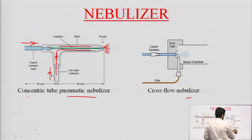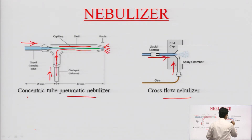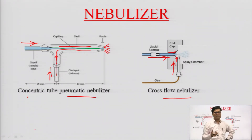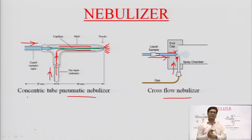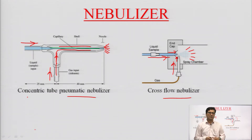In the cross-flow nebulizer, the sample liquid and gases do not travel parallel to each other but move perpendicular to each other. The sample liquid entry point and the high-pressure gas entry point are at right angles. As the liquid crosses the gas stream at a right angle, it distributes into fine droplets, and a spray of fine droplets is observed in the chamber. Both types of nebulizers work differently, but the ultimate goal is to obtain fine droplets of sample so they can be easily evaporated and vaporized in the burner.